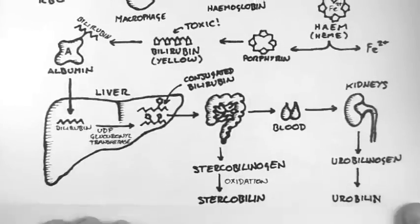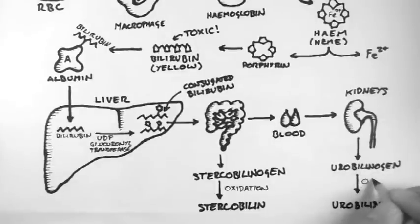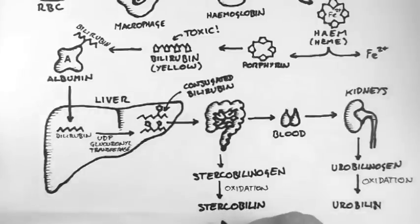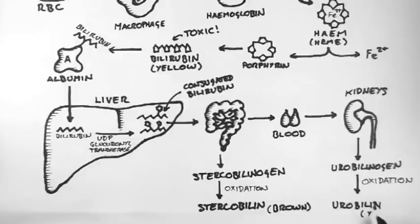Urobilinogen can be converted to urobilin via oxidation and these get excreted in the urine. The urobilin is the molecule which gives urine its yellow color.